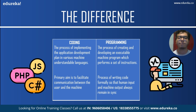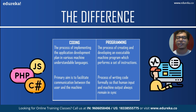The primary aim of coding is to facilitate communication between the user and the machine — if you give the computer a certain input, you expect a certain output. Whereas programming is the process of writing code formally so that for any human input the machine output is always in sync. Programming is not just about coding; it is about keeping all the cycles of application development in tandem so that a given input always produces a meaningful output.